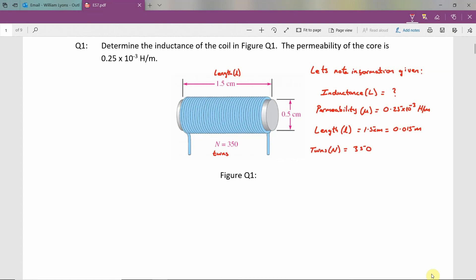The diagram also shows us that the diameter of the inductor coil is 0.5 centimeters. So we are able to calculate the radius r as being half that, so 0.5 centimeters divided by 2. And if we convert that answer into meters, we get 0.25 multiplied by 10 to the power minus 2 meters.